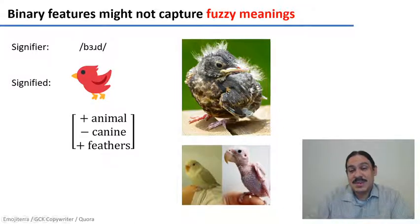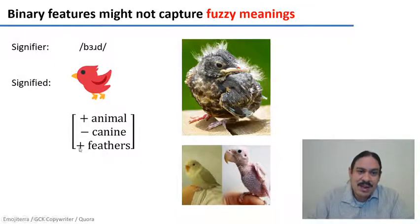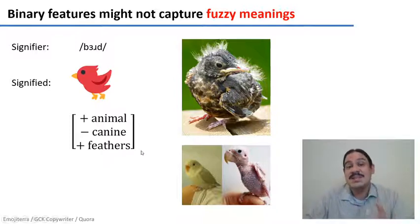And some birds can get diseases where they have no feathers. So in this system, these creatures would be minus feathers. And so they would not be birds. They wouldn't meet the definition.